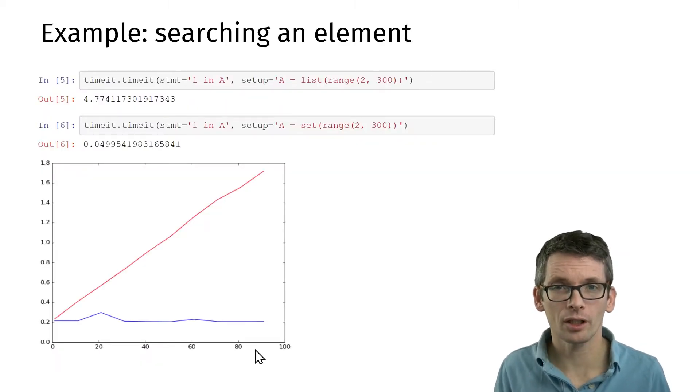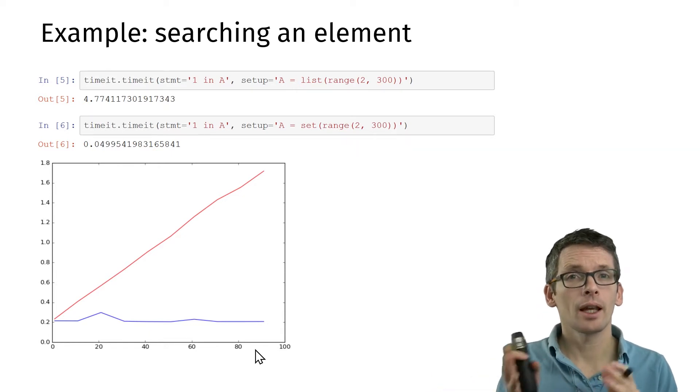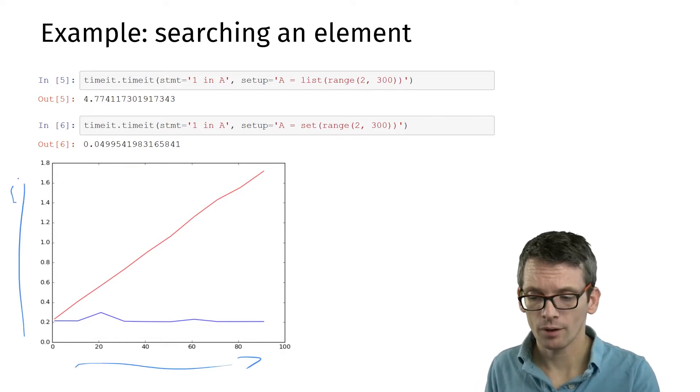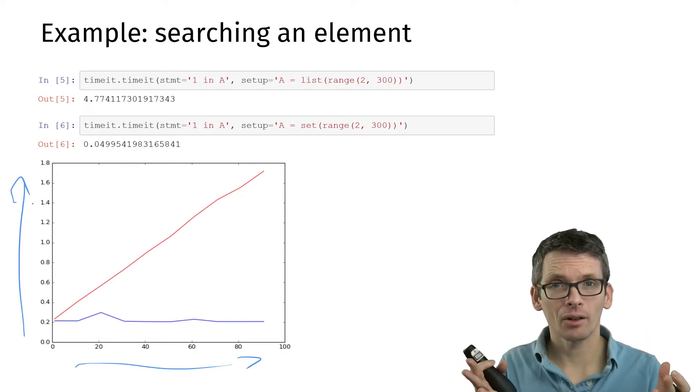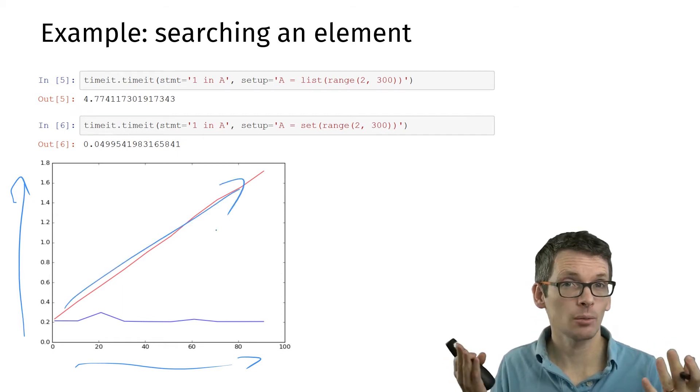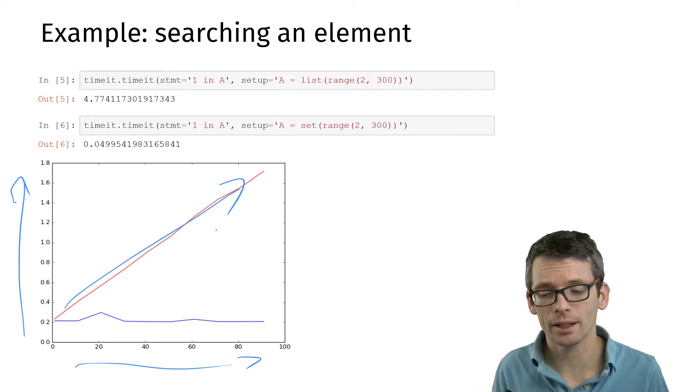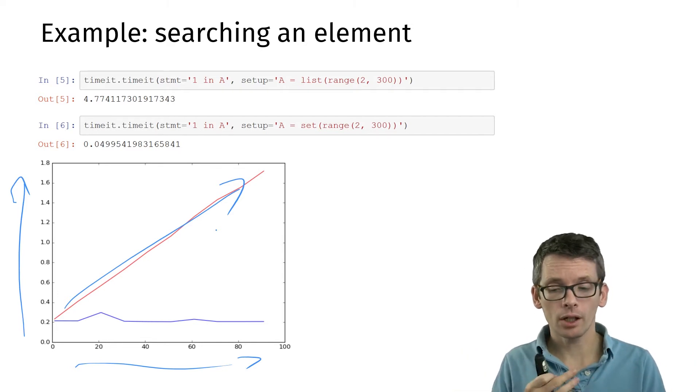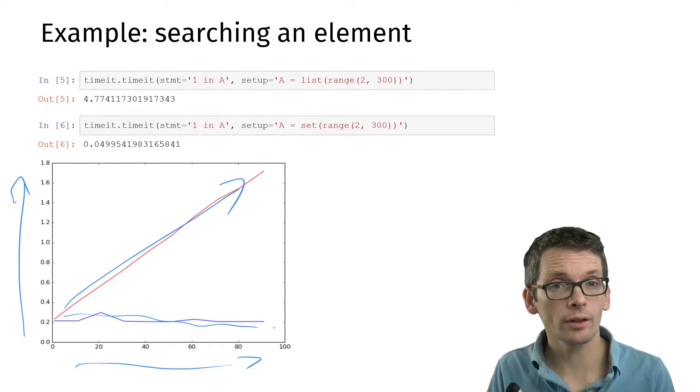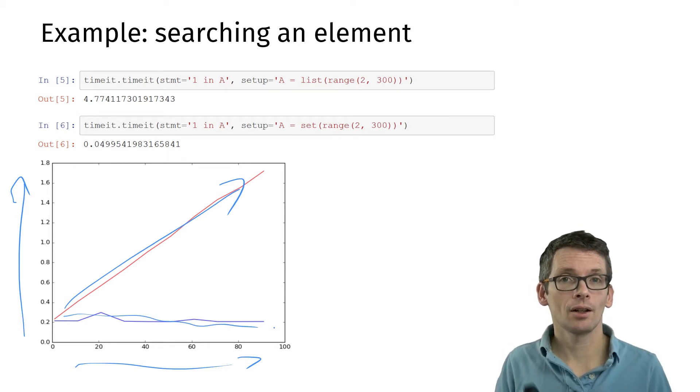So why would you want to use a dictionary? Here I plotted the search time for a collection of elements, once stored in a list and once in a set. You have the size, you have the time, and on a list, searching takes linear time—that is simply a linear search. In the worst case, that's linear. While in a set or dictionary, you get a plot like this down here that looks constant, and indeed we're going to see that it is, under suitable assumptions, constant time.